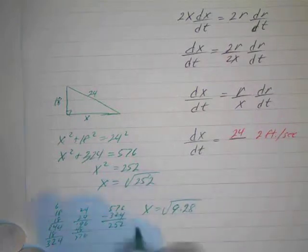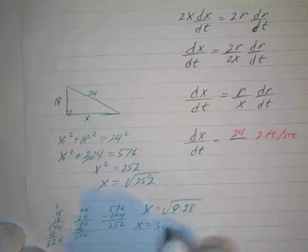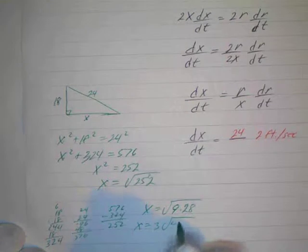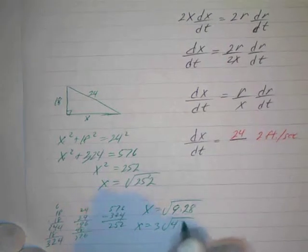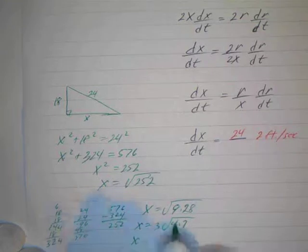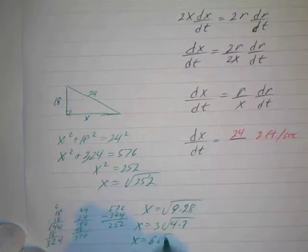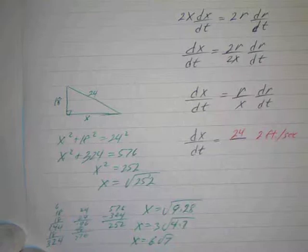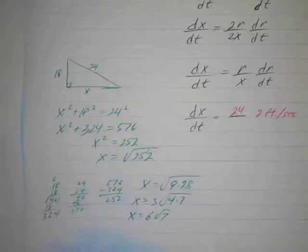So the square root of 9 is 3. So 3 times the square root of 28. I'm sorry, 28 is the same thing as 4 times 7. And the square root of 4 is 2. So x equals, if we bring the 2 out, 2 times 3 is 6. 6 times the square root of 7. So all that for 6√7, but you can do it. No calculator.